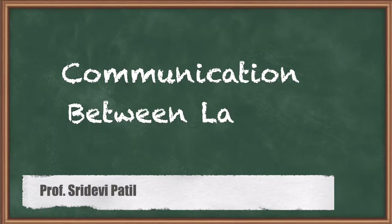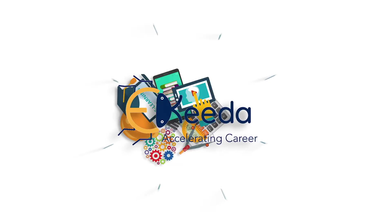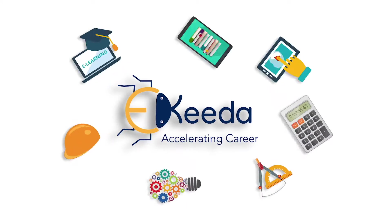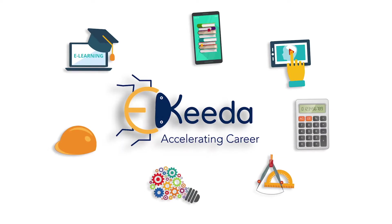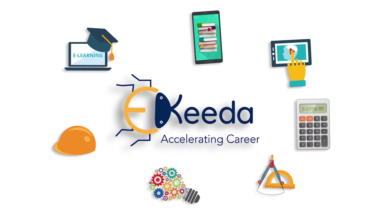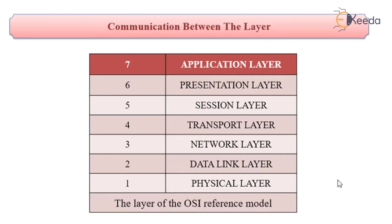Dear students, we are going to study about communication between the seven layers of the OSI reference model. The seven layers include the physical layer, data link layer, network layer, transport layer, session layer, presentation layer, and the application layer.